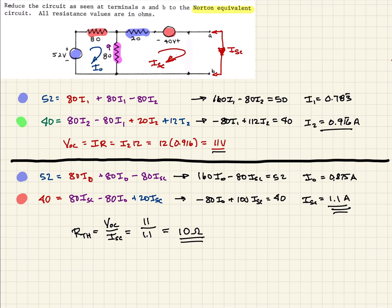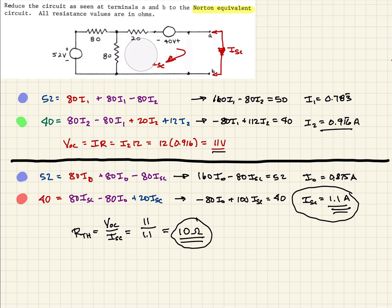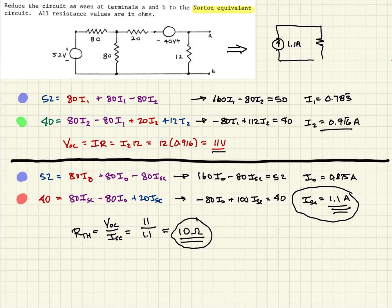They want the Norton equivalent. With the Norton equivalent, we take the short circuit current source and put it in parallel with the Thevenin resistance. Resetting the circuit one more time, we can replace everything to the left of terminals A and B with a current source of 1.1 amps in parallel with a resistance of 10 ohms, connected at terminals A and B. This performs the same as the original circuit.